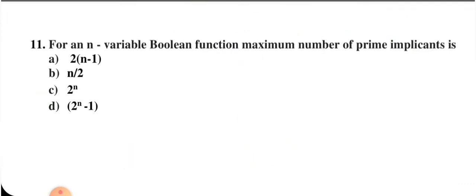For an n-variable Boolean function, the maximum number of prime implicants is n/2.